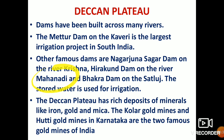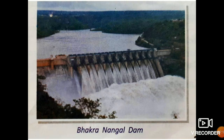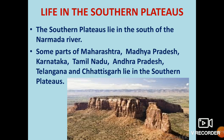Other famous dams include the Nagarjunasagar Dam on the River Krishna, the Hirakud Dam on the River Mahanadi, and the Bhakra Dam on the River Sutlej. The Deccan Plateau also has rich deposits of minerals like iron, gold, and mica. The Kolar Gold Mine and Hatti Gold Mines in Karnataka are the two famous gold mines of India.